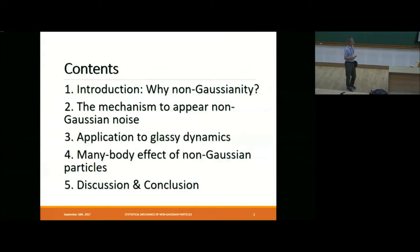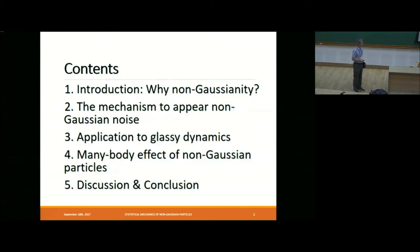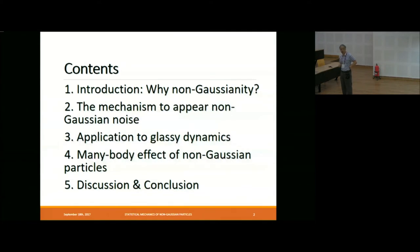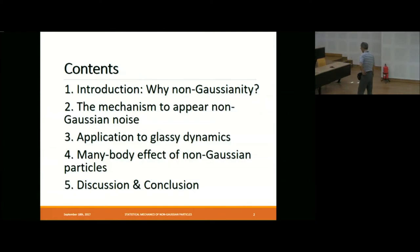So this is the content of my talk. In the first part, I would like to talk about why non-Gaussianity is important. In the second part, I would like to talk about the mechanism for non-Gaussian noise to appear, because the textbook says the central limit theorem must reduce non-Gaussian noise to Gaussian noise. In the third part, I'd like to apply such ideas of particles activated by non-Gaussian noise to non-Gaussian dynamics. And in the fourth part, I will talk on the many-body effect of non-Gaussian particles.